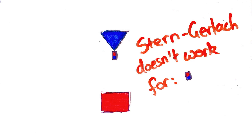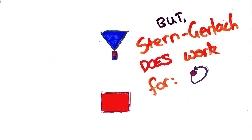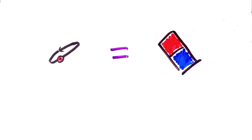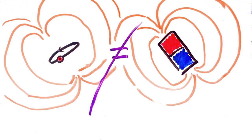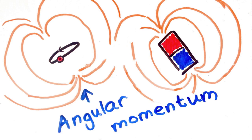It turns out I was wrong — this machine just doesn't work for little bar magnets, exactly for this reason. But it does work when you have a charged particle moving in a circle. I was making a big mistake because I thought these two things were essentially the same since their magnetic fields are the same. But particles going in loops have one extra property I completely neglected: they have angular momentum that comes from their rotation.